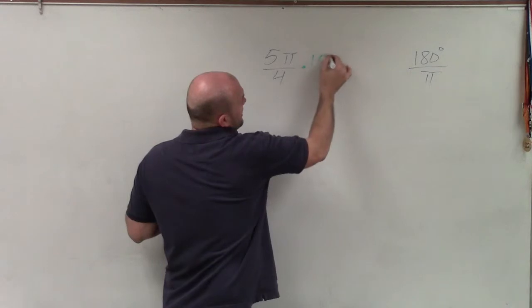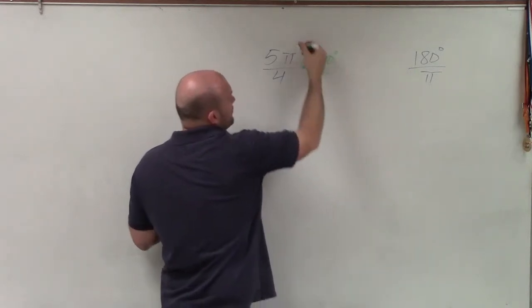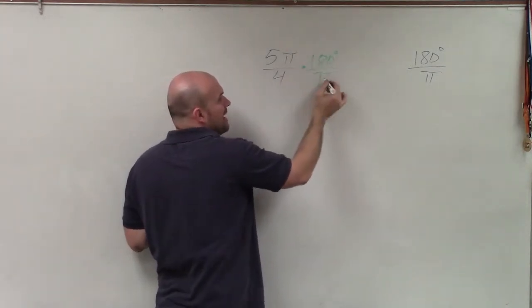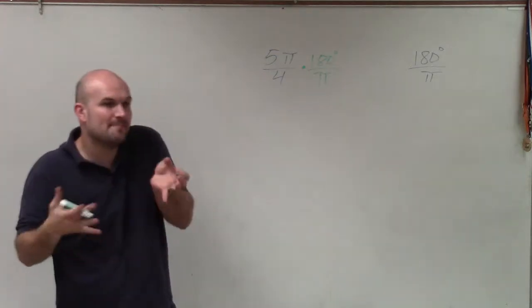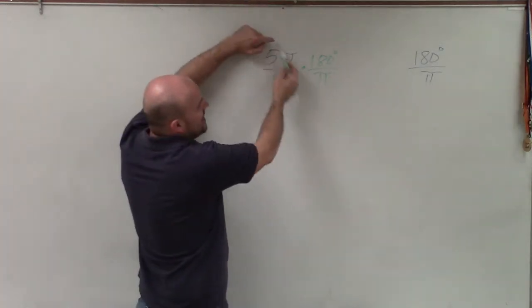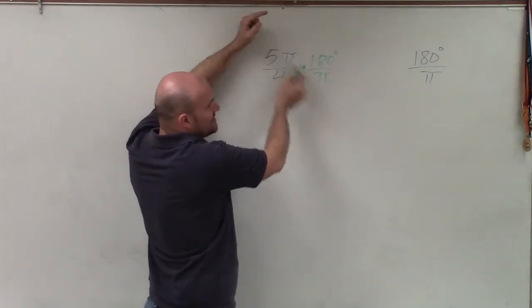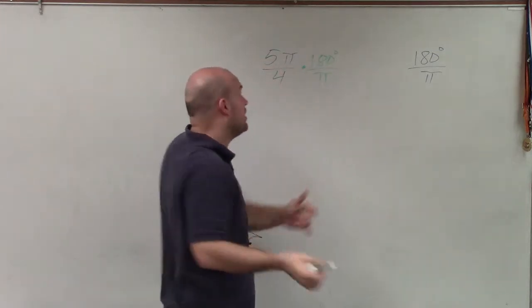And the way that it's going to do that is you can see that I have a pi in the numerator and pi in the denominator. Well, now when I multiply them across, I can now use my division property and divide those out into 1.